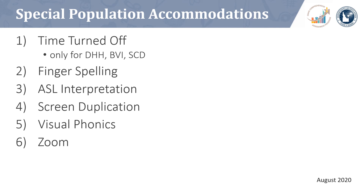Other accommodations only available to these special populations are fingerspelling, ASL interpretation, screen duplication, visual phonics, and zoom. Information related to the administration of IRI to special populations can be found in Appendix E for deaf and hard of hearing, and Appendix F for blind and visually impaired. Appendix G with guidance for students with significant cognitive disabilities will be released in summer 2021.